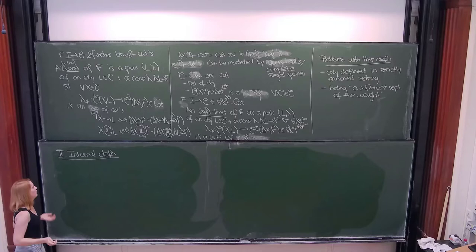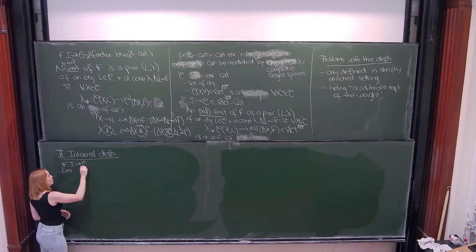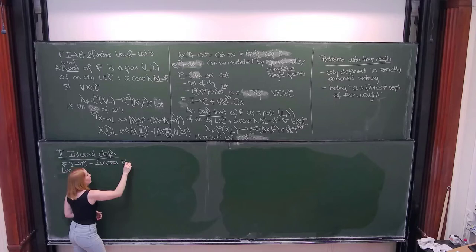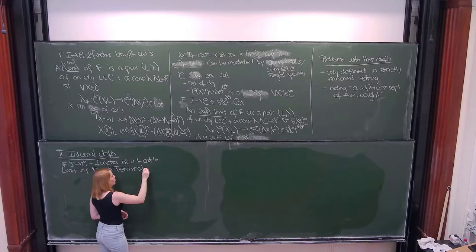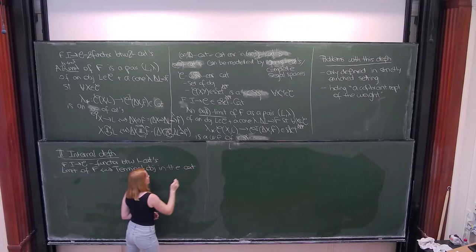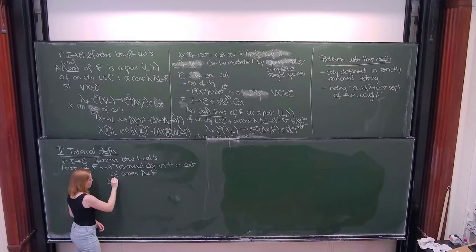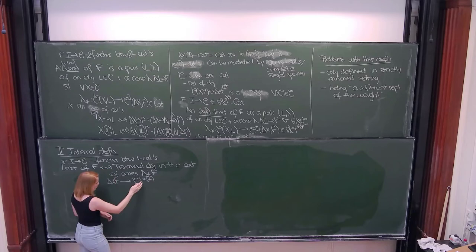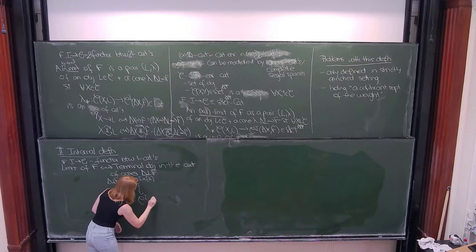Now I want to talk about the second approach to limits, which I call the internal definition. I want to recall a theorem of ordinary 1-categories: given a functor between 1-categories, a limit of this functor corresponds to a terminal object in the category of cones. This category of cones can be defined as a certain pullback—taking the category of functors from I to C, then the category of arrows, and pulling back along the diagonal and the constant map at the object.